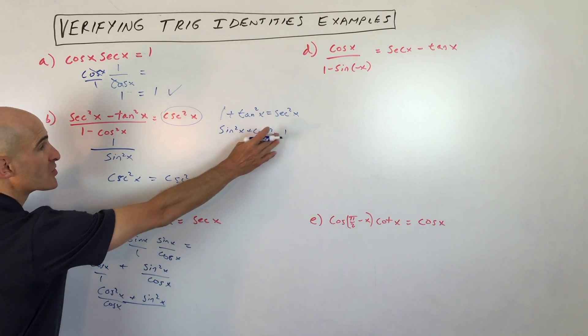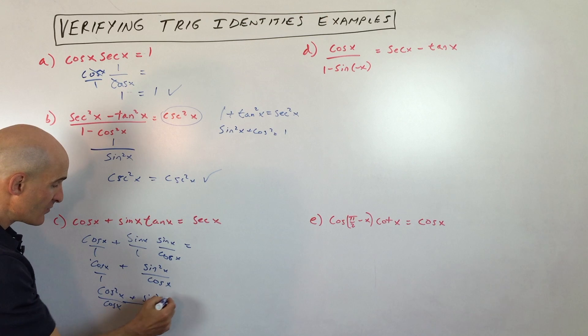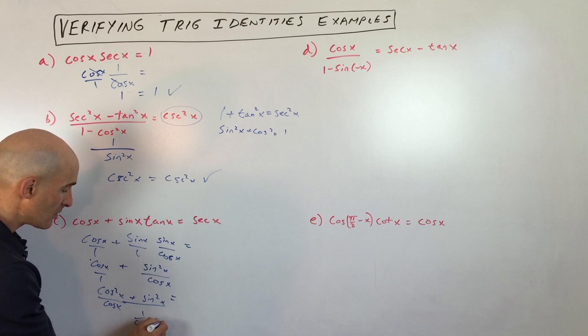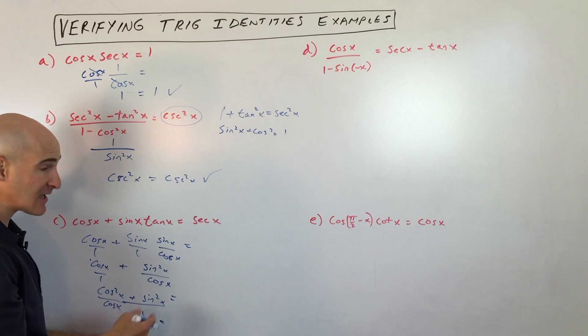Sine squared plus cosine squared we talked about is 1. So this is going to be 1 over cosine x, which equals secant x. And we proved it.